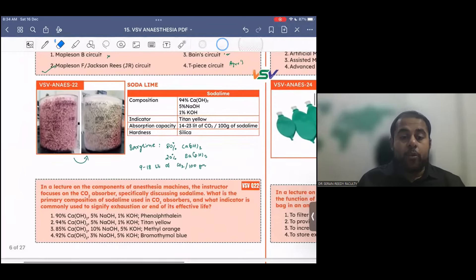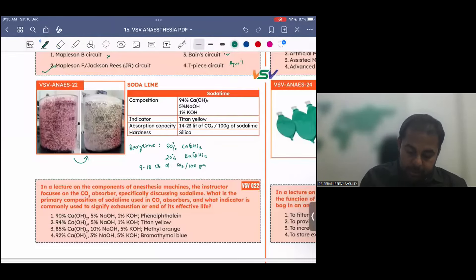In a lecture on the components of anesthesia machines, the instructor focuses on the carbon dioxide absorber, specifically discussing soda lime. What is the primary composition of soda lime used in carbon dioxide absorbers, and what indicator is commonly used to signify the exhaustion of its effective life? 90% calcium hydroxide, 5% NaOH, 1% KOH, and phenolphthalein indicator, you answered it correctly. It is 94% calcium hydroxide, 5% NaOH, and 1% KOH, and the indicator is Titan yellow.